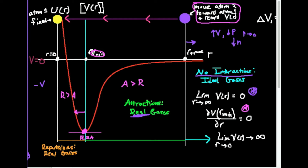If I continue to bring the atoms closer and closer to one another, I get more and more repulsions, and you can see the repulsions are actually increasing very quickly. Also notice that as I go farther and farther to the left, as I approach r equals zero, this curve is going to blow up and potentially go to infinity. That's described by this final limit: if I take the limit of the potential energy as the radius goes to zero, the potential energy diverges — it becomes infinite. This is why you can never have two atoms on top of one another unless they undergo some kind of nuclear reaction and fuse.